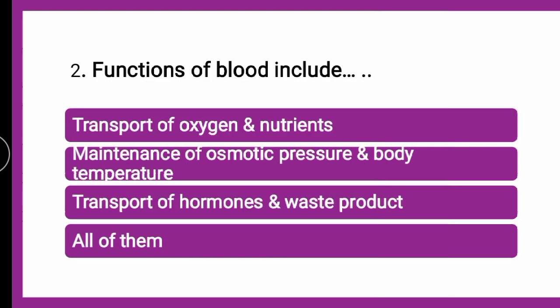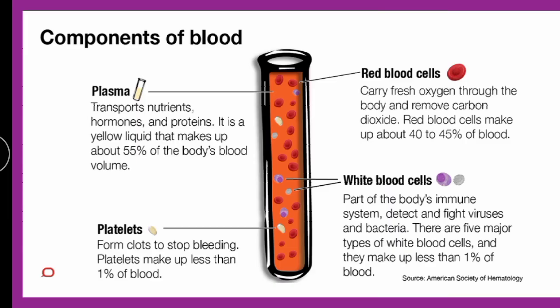Next question: functions of blood include — whether the functions include transport of oxygen and nutrients, maintenance of osmotic pressure and body temperature, transport of hormones and waste products, or all of them. You can judge your answer and we will go for the explanation.